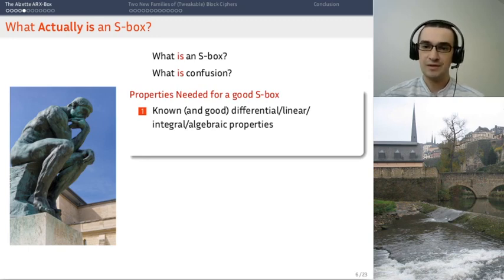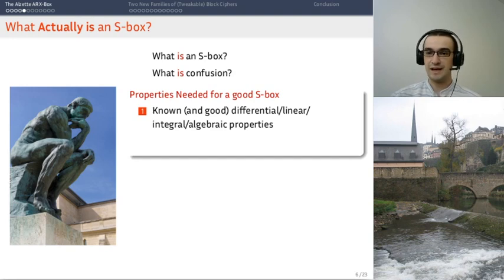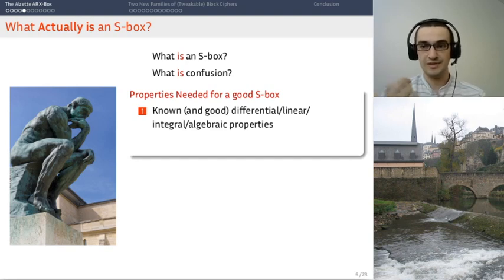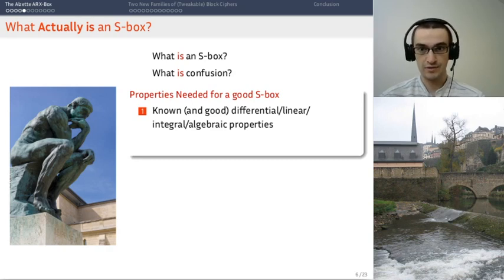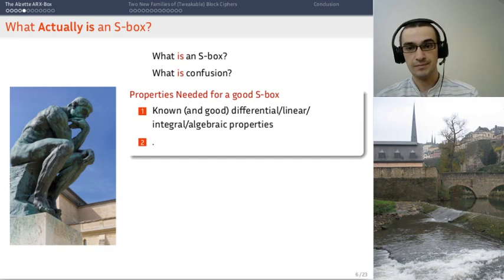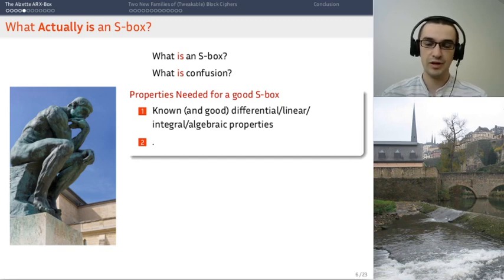So let's see what are the properties that you need for a good s-box. You need that they have known, very important that we know the properties and that they be good. Obviously you want good properties that are relevant to crypto. So differential properties, linear ones, integral algebraic properties. You want them to be good and you want to know them. That's what makes a good s-box. And that's pretty much it actually. You don't need to know its size. It's not really a criteria to be a good s-box. The only thing you care about is that the properties are known and that they are good.